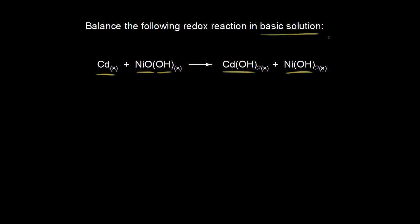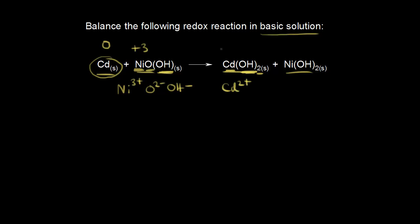The first step is to assign oxidation states. For solid cadmium, this is an element, so the oxidation state is zero. For nickel oxide hydroxide, hydroxide is OH minus and oxygen is O two minus, so nickel must be Ni³⁺ with an oxidation state of plus three. For cadmium hydroxide, hydroxide has a negative one charge and we have two of them, so cadmium is Cd²⁺ with an oxidation state of plus two. For nickel hydroxide, same thing — two hydroxides, so nickel is Ni²⁺ with an oxidation state of plus two.